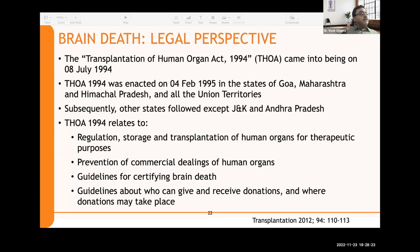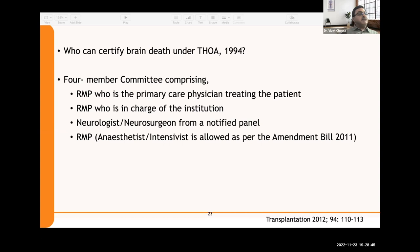THOA 1994 relates to regulation, storage, and transplantation of human organs for therapeutic purposes. It aims to prevent commercial dealings of human organs, gives guidelines for certifying brain deaths, and specifies who can give and receive donations and where donations may take place. Brain death must be certified by a four-member committee comprising: the primary care physician treating the patient, the head of the institution, a neurologist or neurosurgeon from a notified panel, and — since the 2011 amendment bill — an anesthetist or intensivist replacing a fourth registered medical practitioner.